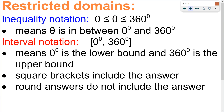Sometimes we're going to have restricted domains that can be written in inequality or interval notation. Inequality notation, as in the first example, would be theta is greater than or equal to zero but less than or equal to 360 degrees. In interval notation, I would write it as [0, 360] — the square brackets lock the answer in, meaning it includes those endpoints. So pay attention to any restricted domains in the question.